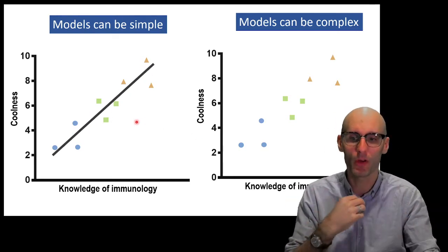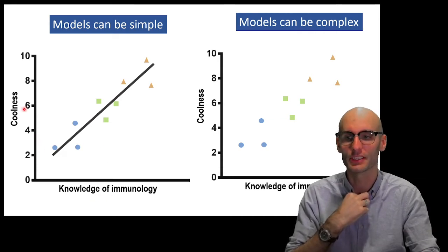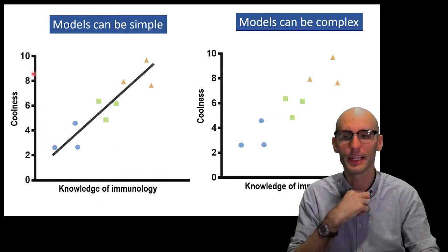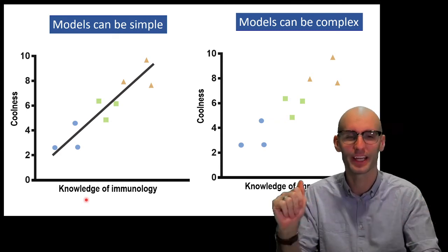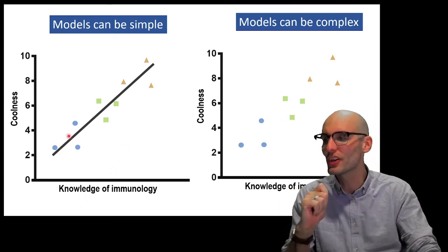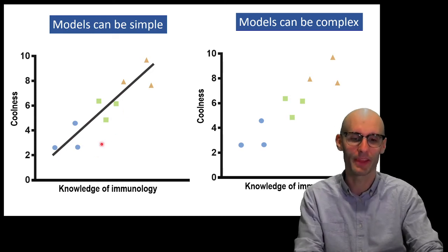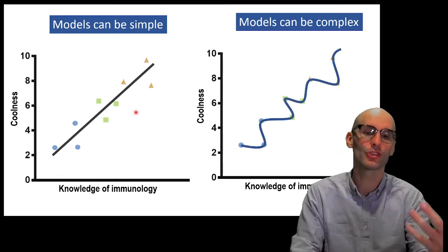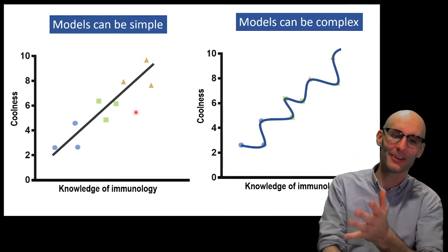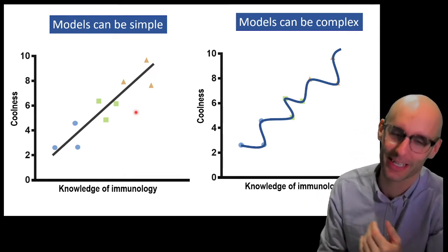Now, we can run a simple model on this data. So, this is knowledge of immunology versus coolness. So, clearly, you are cooler the more immunology you know. This is real data. Don't question it. Don't try and repeat it. So, you could run a nice linear regression over the top of that, and you see this nice significant result there.